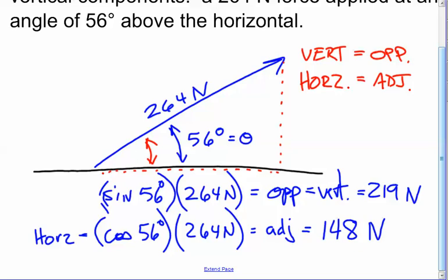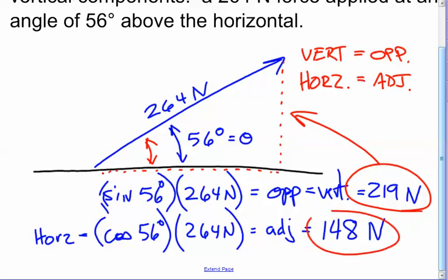As a little check: since the angle here is greater than 45 degrees, we would expect the horizontal component to be somewhat less than the vertical component. The vertical component is 219 Newtons and the horizontal component is 148 Newtons, which makes sense — as the angle gets steeper and steeper, the vertical component gets greater and greater while the horizontal component diminishes.